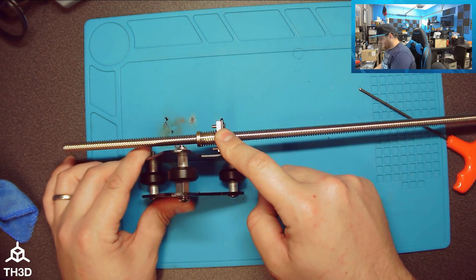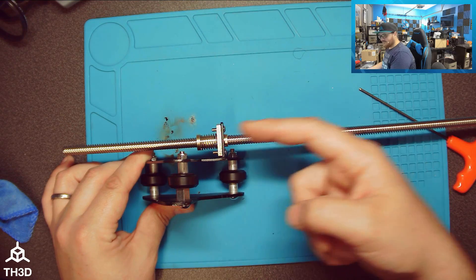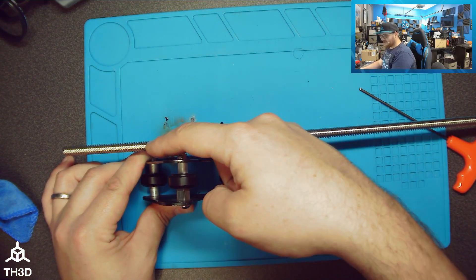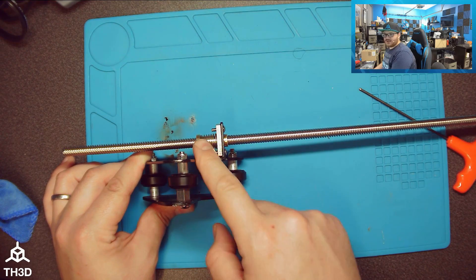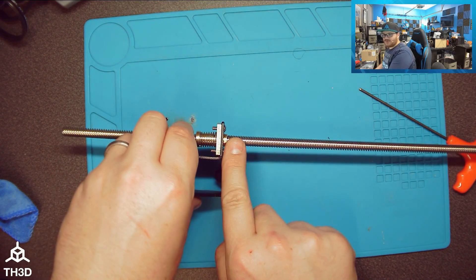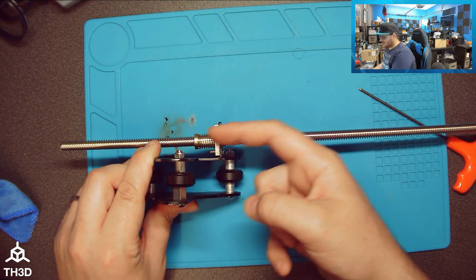What this nut does different from the stock one is this eliminates play in the vertical direction. So this is your vertical Z here. And by having the tension spring on, you're pushing these two parts apart from each other. It's going to eliminate backlash on your Z axis.